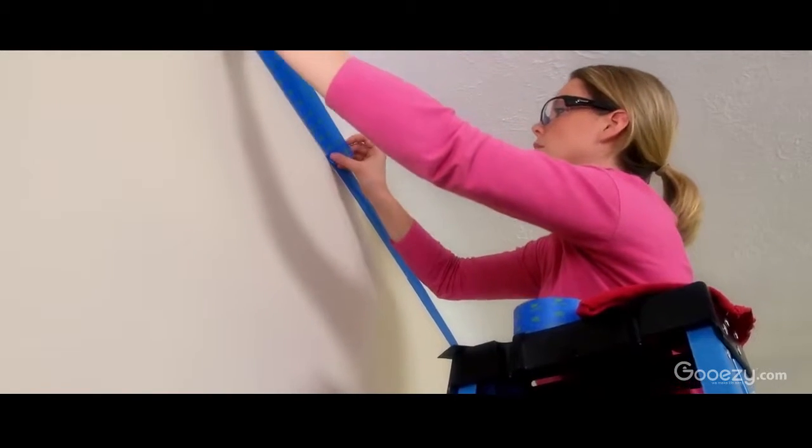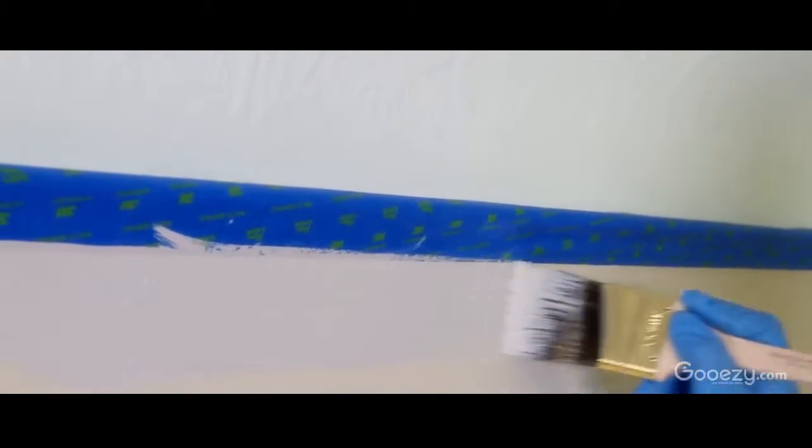Once it's dry, you can mask off the edges with painter's tape and start on the walls. To paint the edges, or cut in,